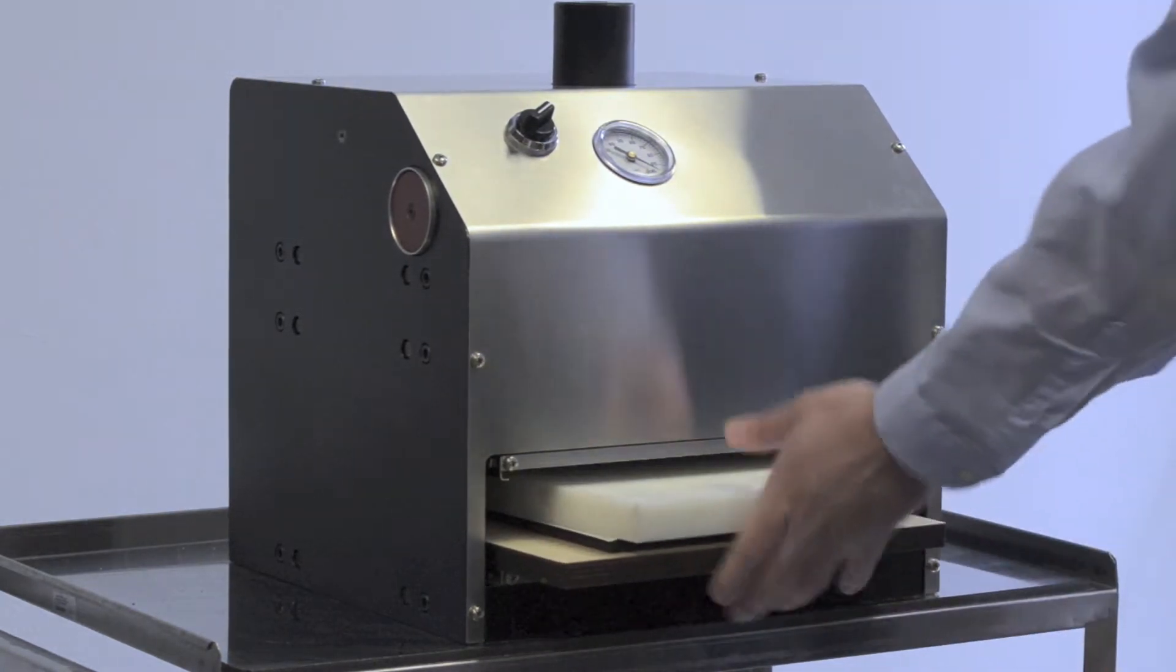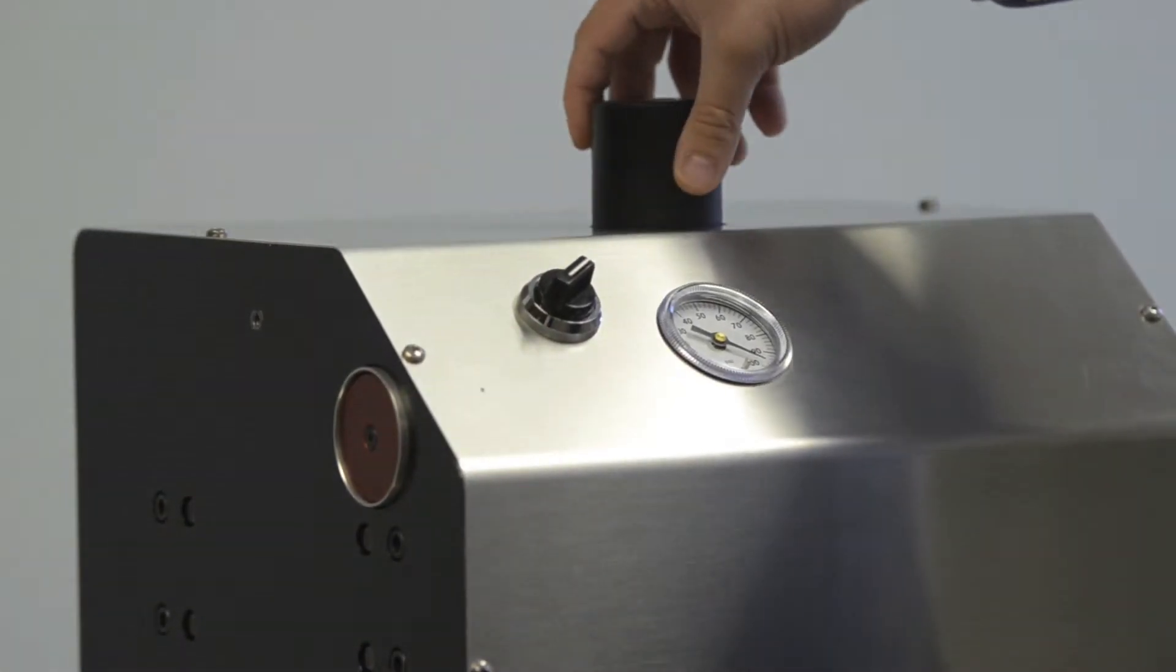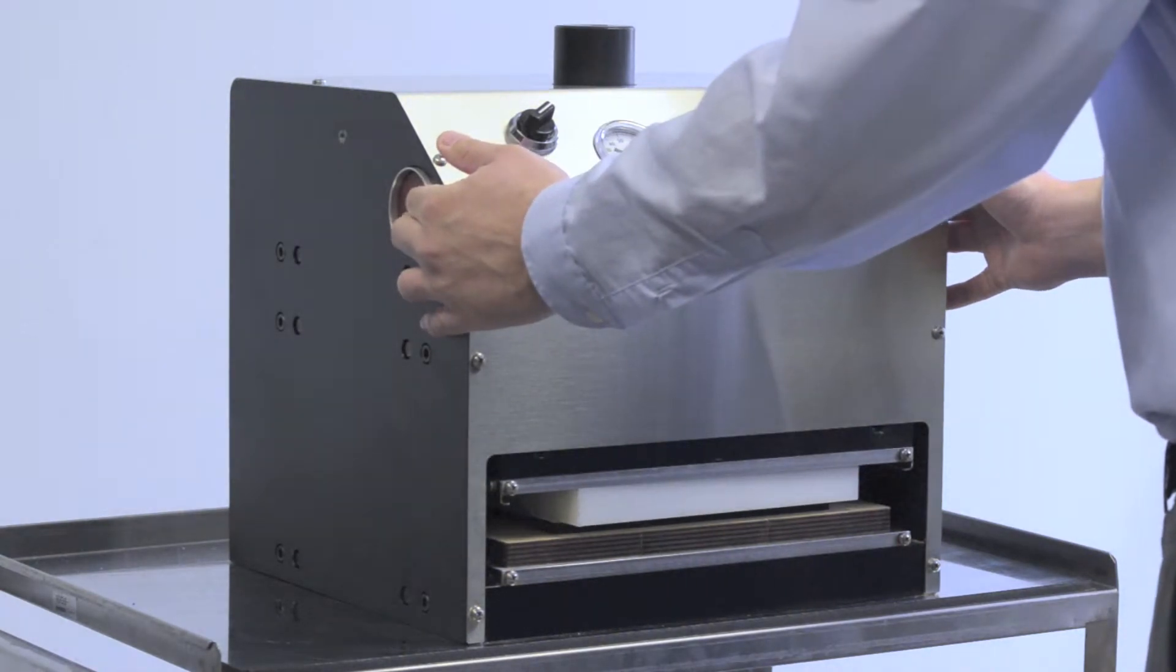For instance, you can emboss or cut and crease small run boxes with the use of matrix or counterplates. All with perfect registration.